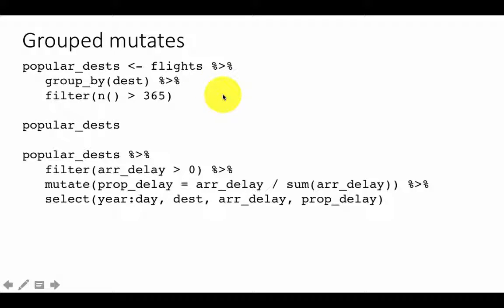We select year, day, destination, arrival delay, and proportion of delay. This way we are combining grouping with mutating. We've covered a lot of ground over the last two sessions with dplyr — these are very powerful functions for manipulating large amounts of data conveniently, and the syntax, once you get used to it, is very user-friendly. We'll end our discussion of dplyr here and move on to other topics starting from next week.